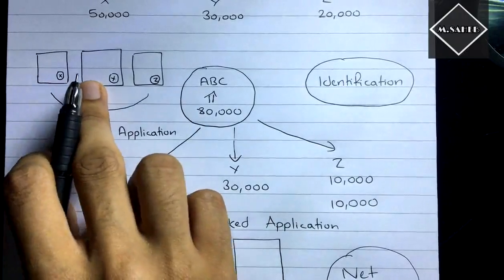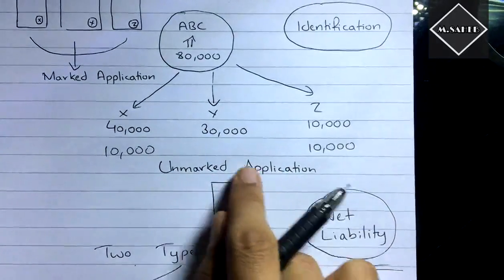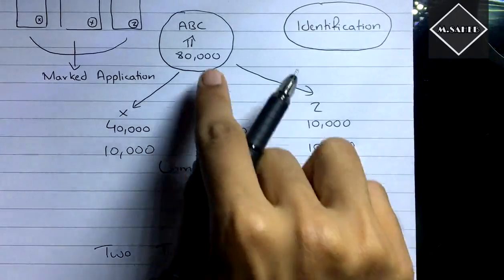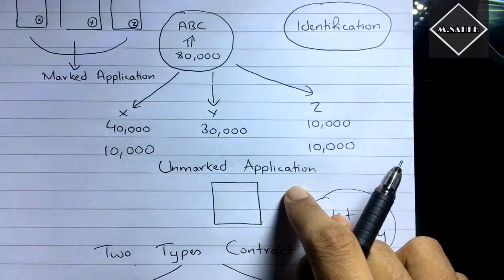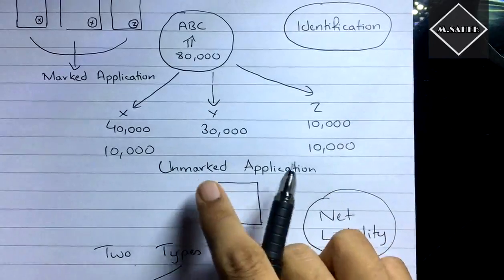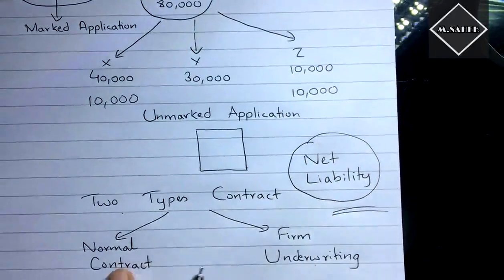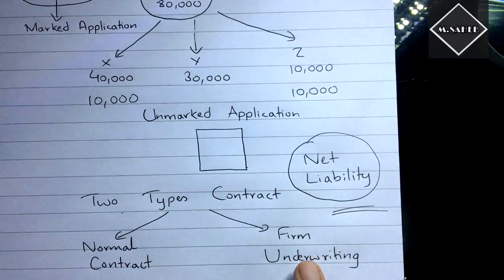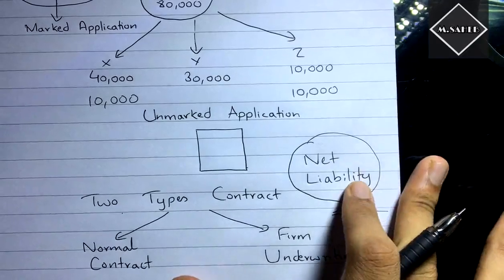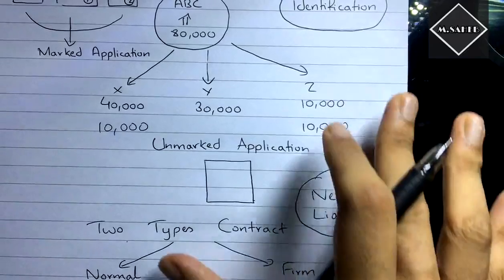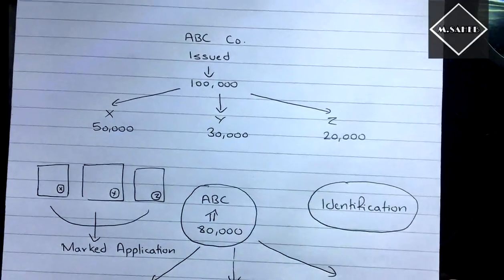To summarise: marked applications carry stamps identifying the underwriter, while unmarked applications have no mark and come through the company's own efforts. There are two types of underwriting contracts — normal contract and firm underwriting. We will cover firm underwriting and solve problems on it in the next video. It's very simple — we only need to find the net liability.